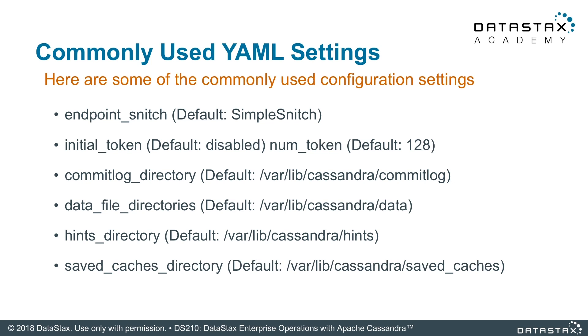Now you can move on to some other commonly configured settings. Let's start with endpoint snitch, which is required if you want your cluster to be topology aware. Next are initial token and num tokens, which come into play if you want to use virtual nodes — also known as V nodes — to evenly distribute data in your cluster. The next few settings are for directories where you store information such as commit logs, your actual data, hints, or key and row cache files. And last but not least, some other settings you can enable or disable in your YAML that you should at least know about.